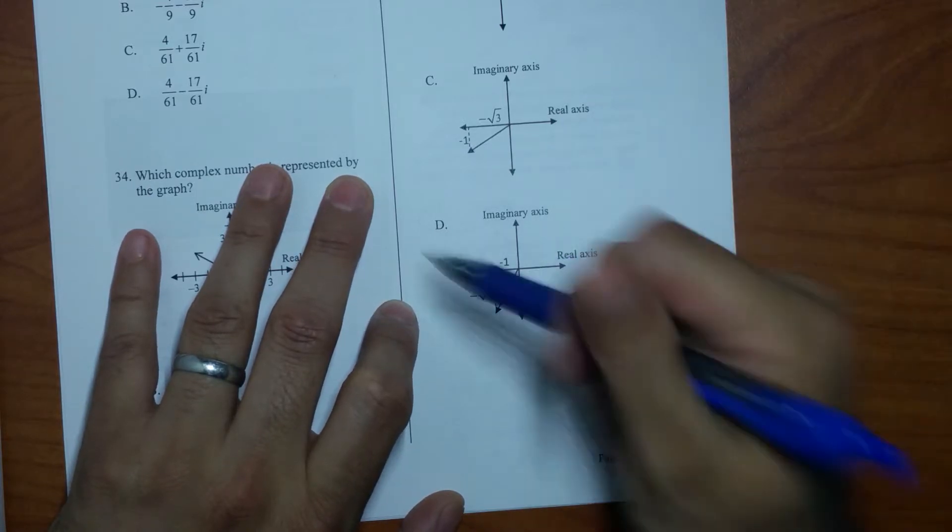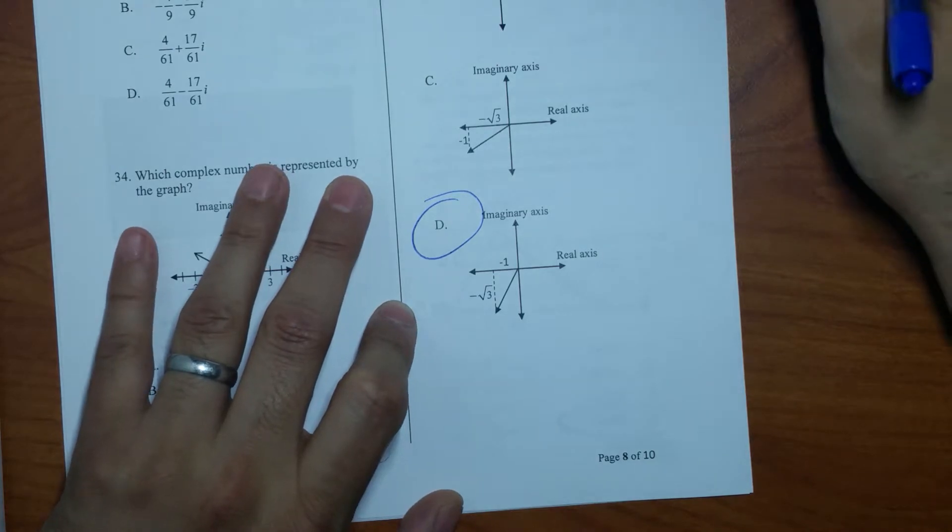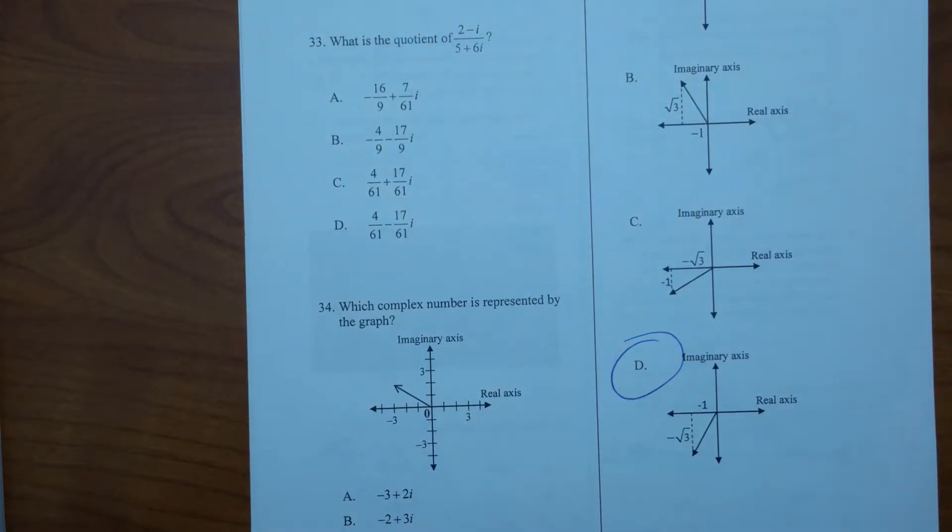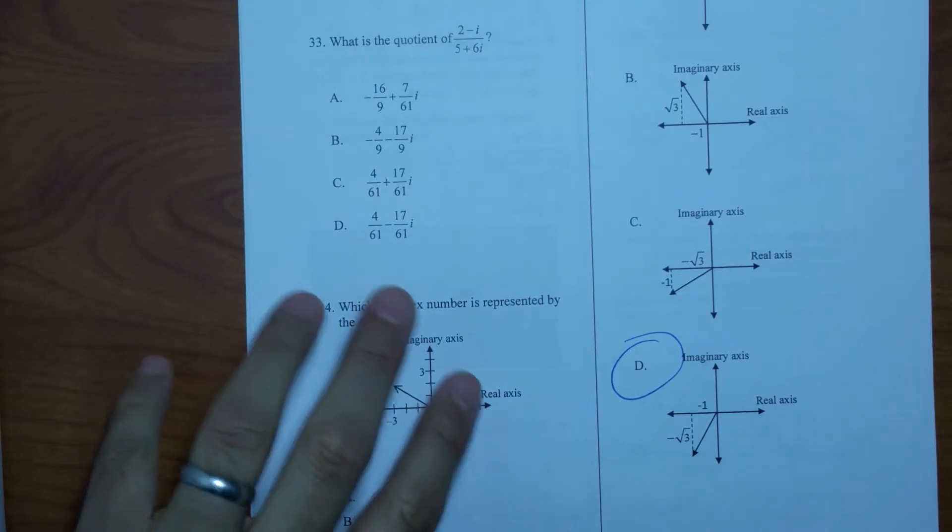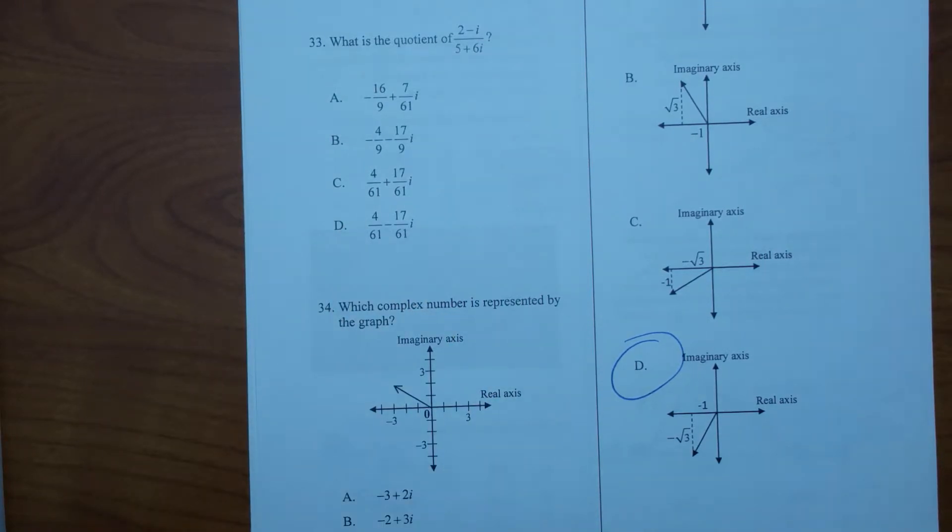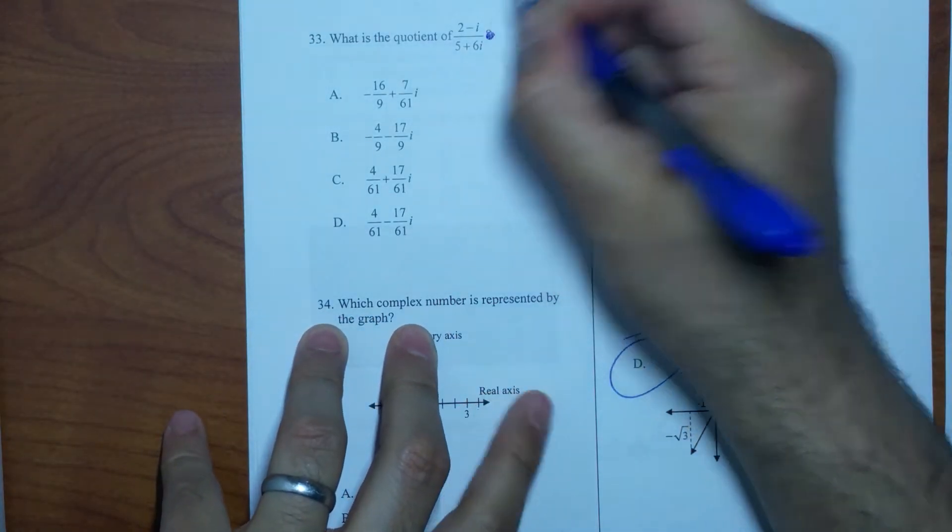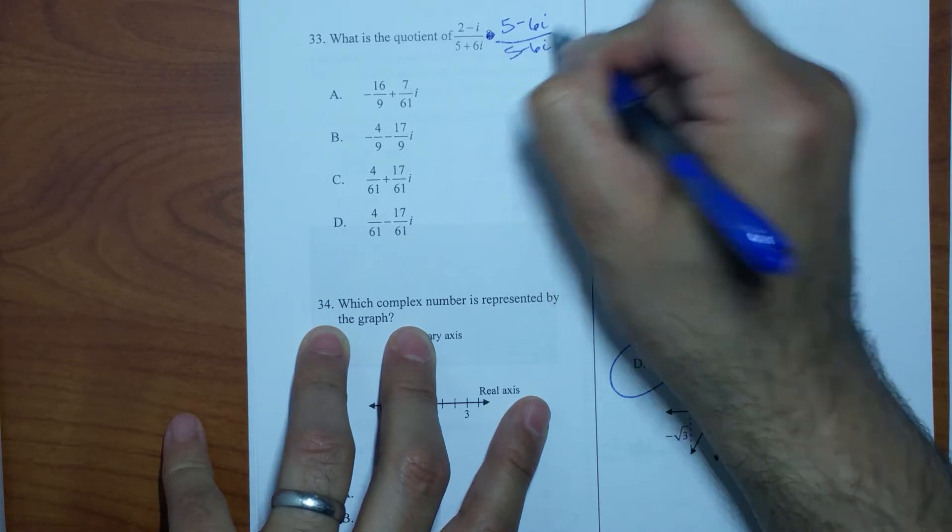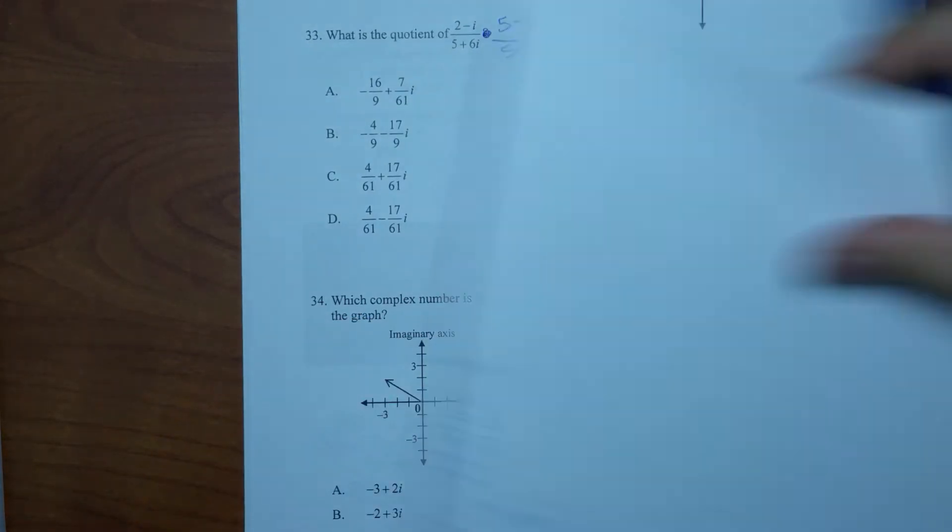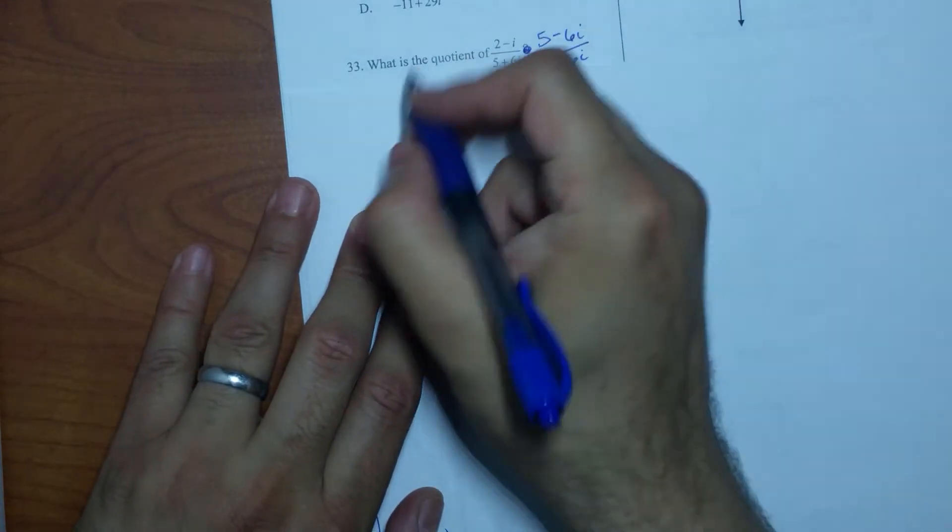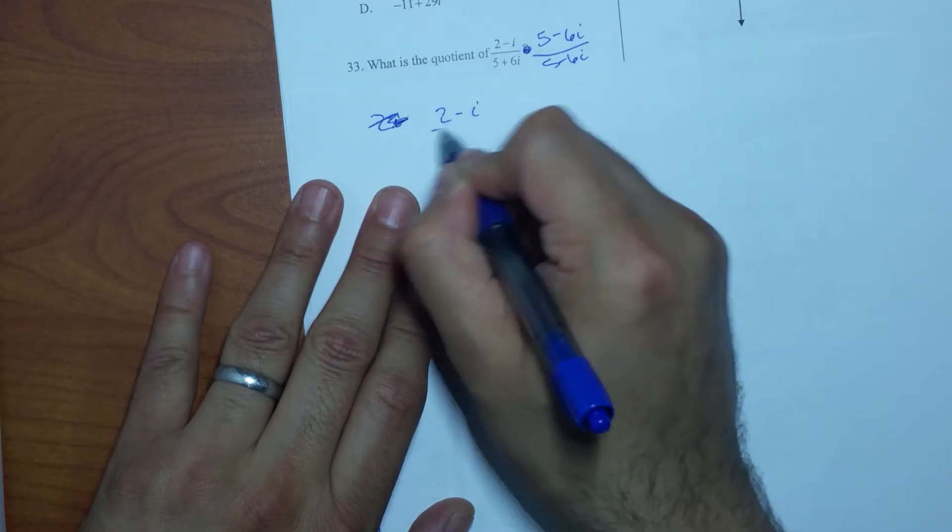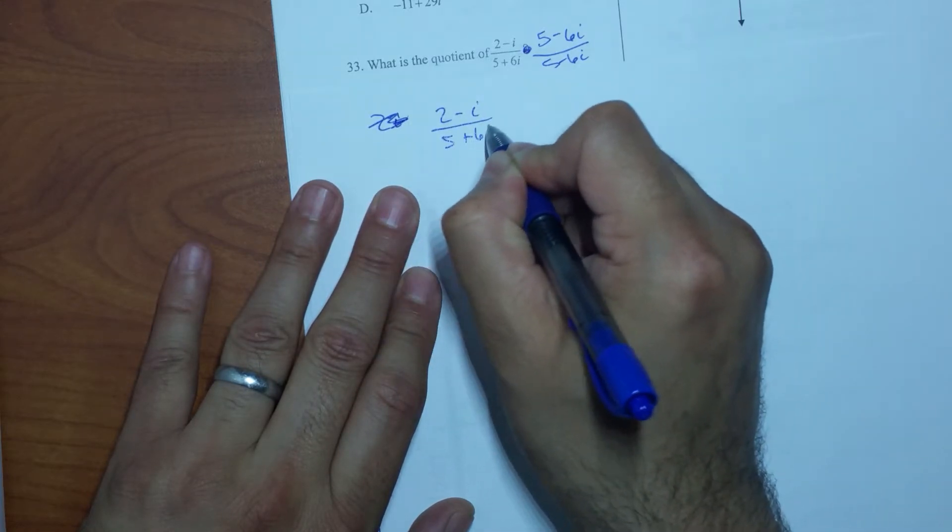So now let's take a look at 33. For 33, what is the quotient of this? Now to do this we had to do what? Multiply by the conjugate, right? The conjugate is going to be minus 6i. So as I distribute this, I'm going to move it to another piece of paper here, so it's going to be 2 minus i over 5 plus 6i times 5 minus 6i over 5 minus 6i.